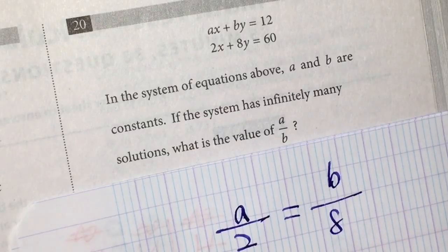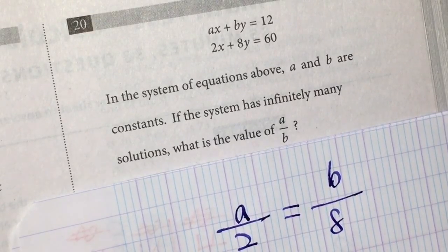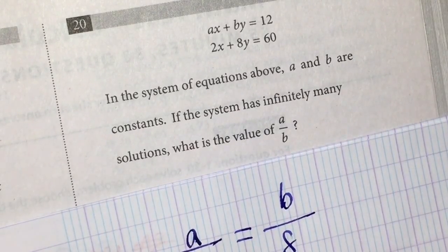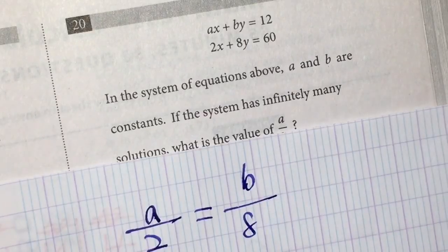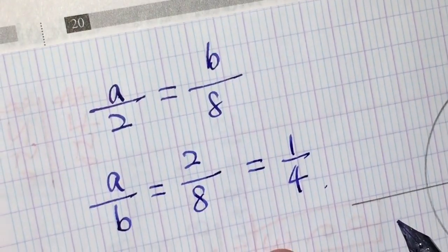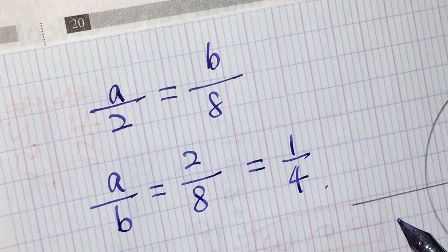So a over 2 must be equal to b over 8. And we switch, a over b equal to 2 over 8. So what is the value of a over b is 1 over 4. Did you see it? Yes.